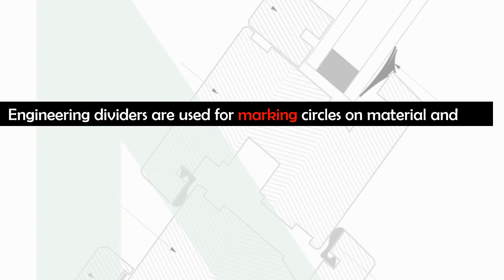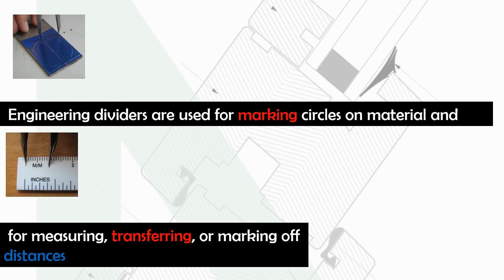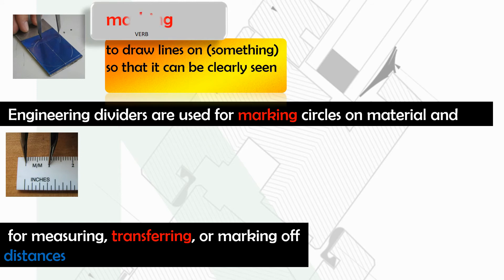Engineering dividers are used for measuring, transferring, or marking off distances. Marking is to draw lines on something, in this case metal, so that it can clearly be seen.